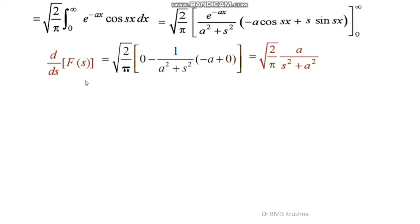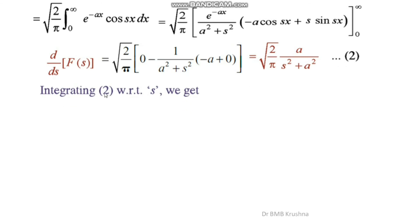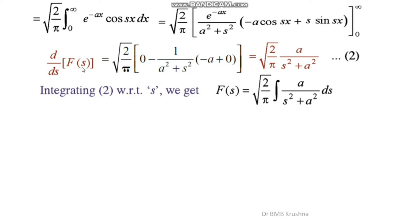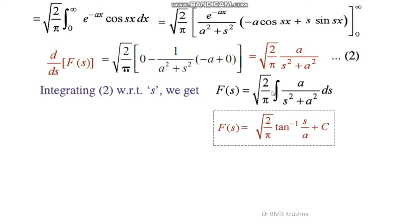Integrating both sides of the first-order ODE with respect to s, we get F(s) = √(2/π) · ∫ a/(s²+a²) ds. Since a is a constant, this equals √(2/π) · a · (1/a) · tan⁻¹(s/a) + C, and the a terms cancel, giving F(s) = √(2/π) · tan⁻¹(s/a) + C.